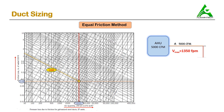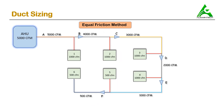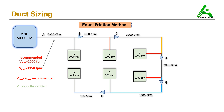The maximum velocity of air in our sample project is 1350 FPM, flowing in section A. The recommended maximum by Carrier for a library was 2000 FPM. Since 1350 FPM is less than 2000 FPM, the velocity test is verified. We don't need to check any other section because velocity only decreases further along the duct. This first verification step is now complete.